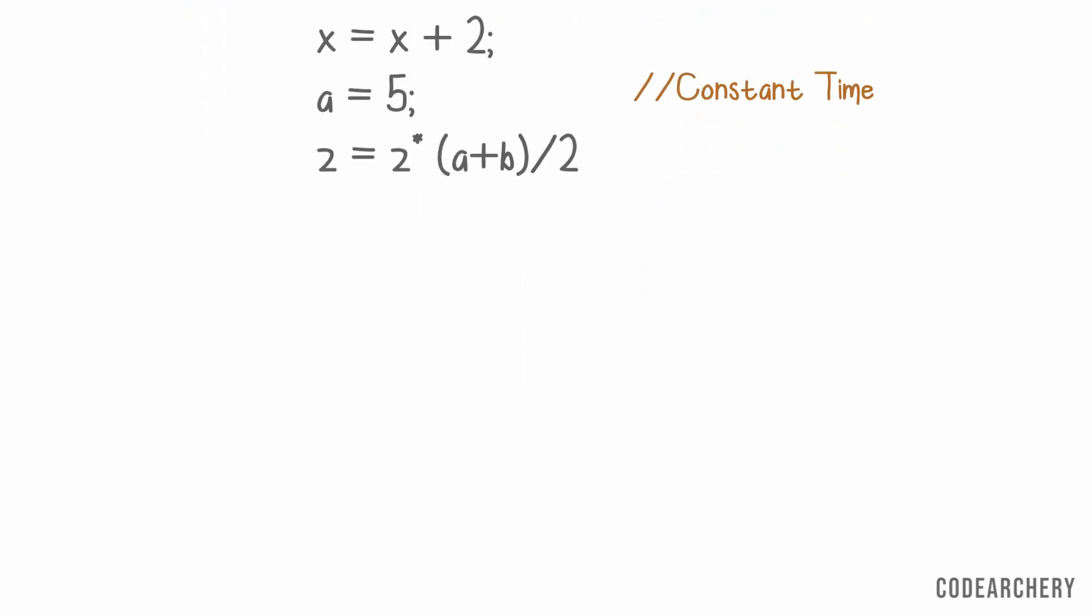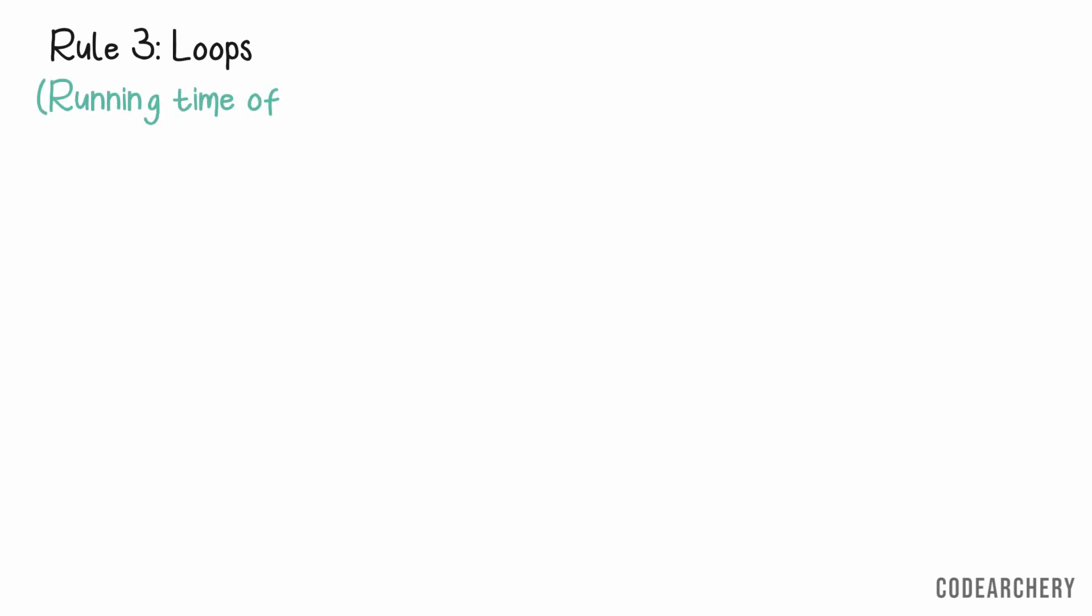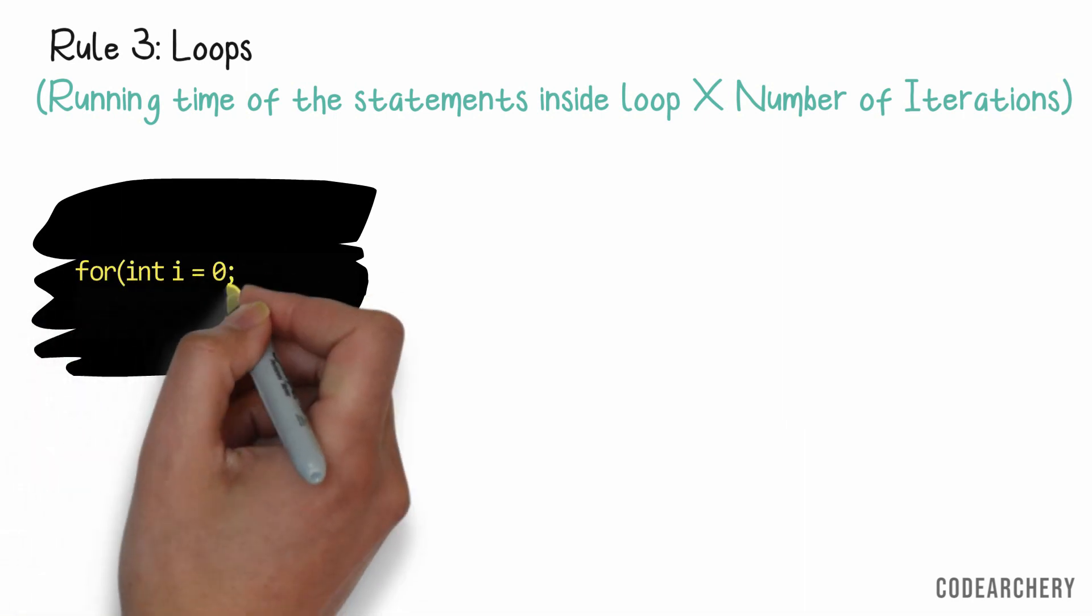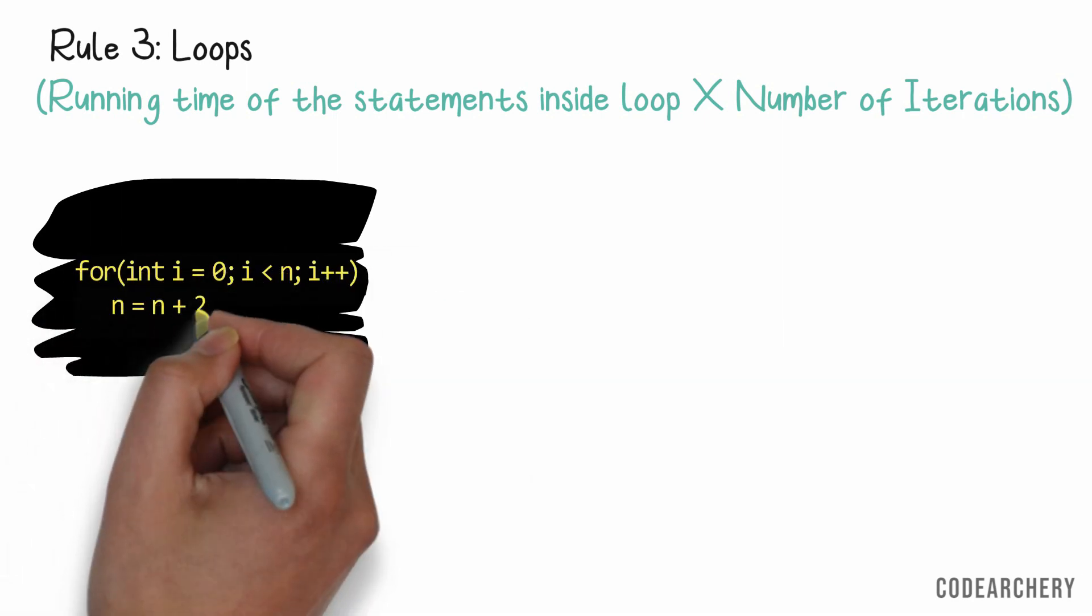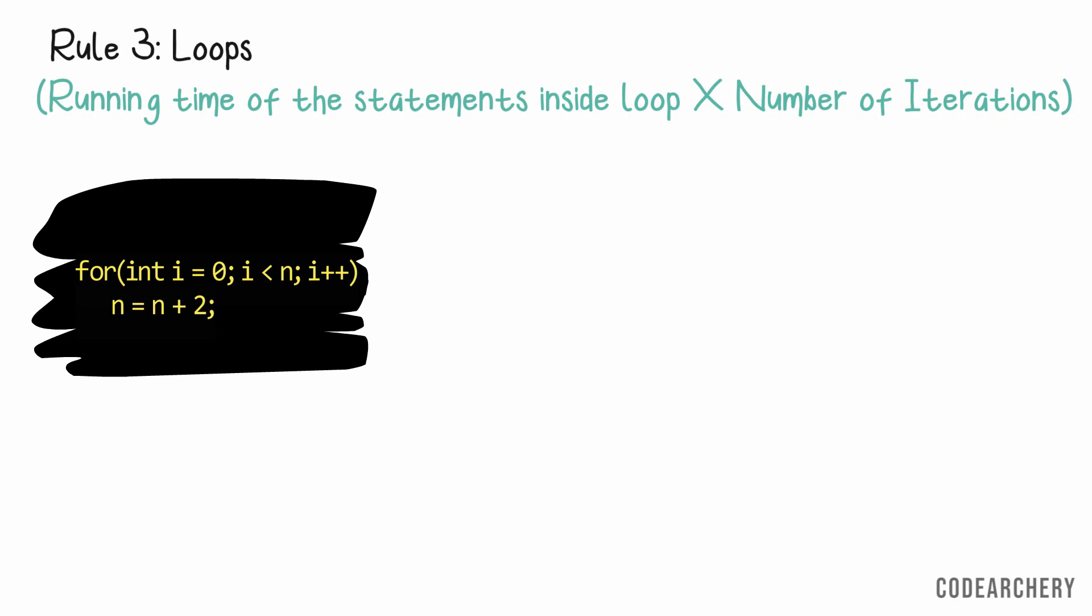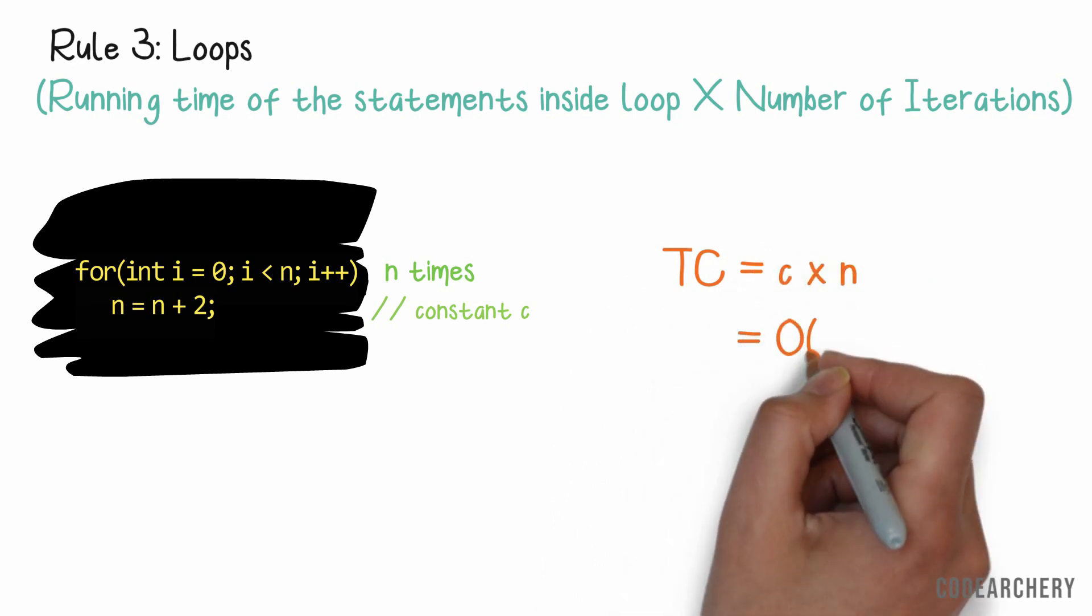Rule 3 is about loops. The running time of a loop is at most the running time of statements inside the loop multiplied by the number of iterations. For example, this for loop which goes from 0 to n. So, inside this loop, we are doing an addition operation which takes constant time. And the loop will iterate n times. So, our time complexity is constant multiplied by n. So, by our rule 1, it's only n.